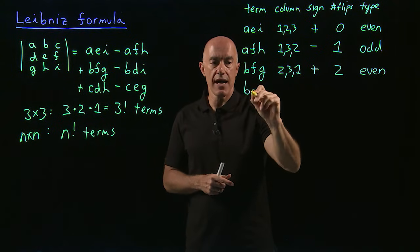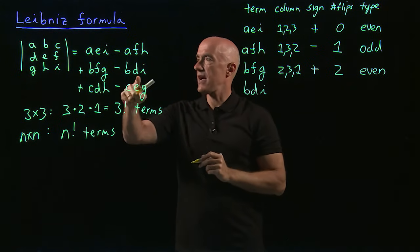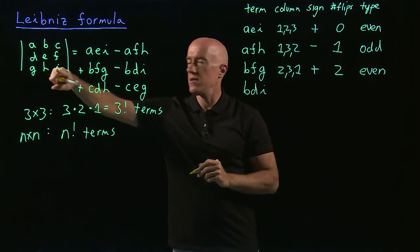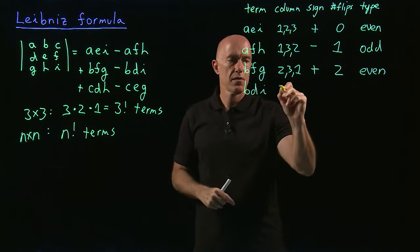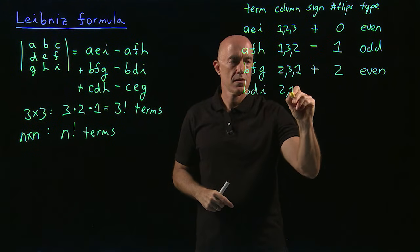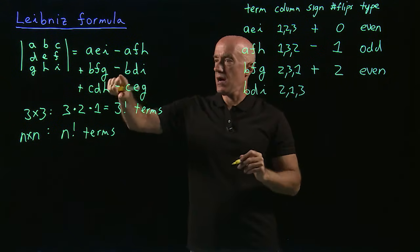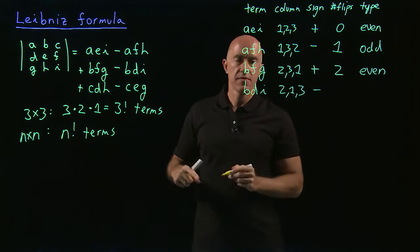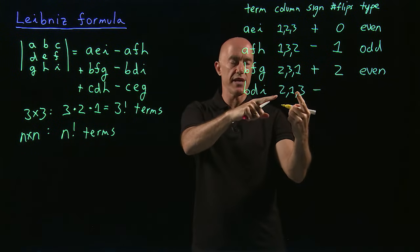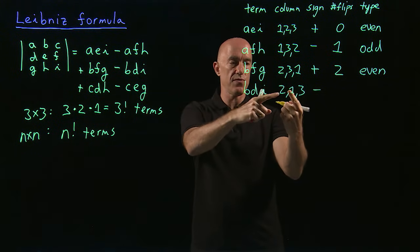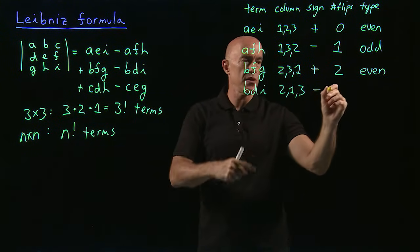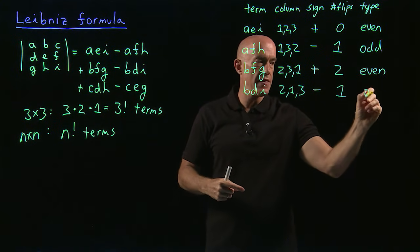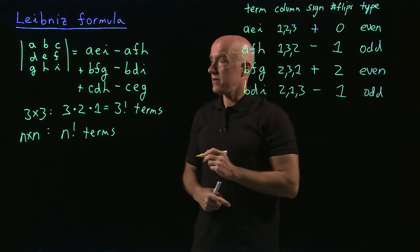Next, B, D, I. The column order is 2, 1, 3. That's a negative sign. How many permutations to get to 1, 2, 3? You just swap one and two — one permutation. One is odd.